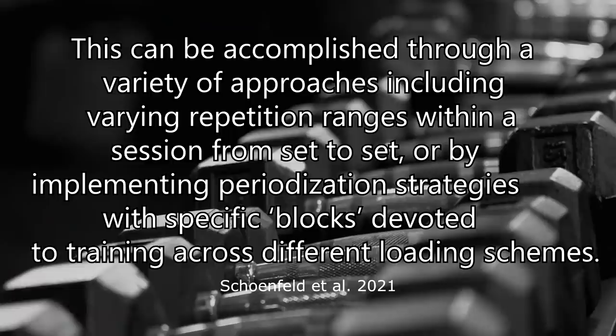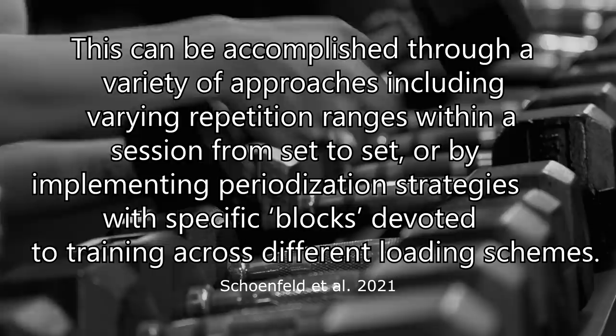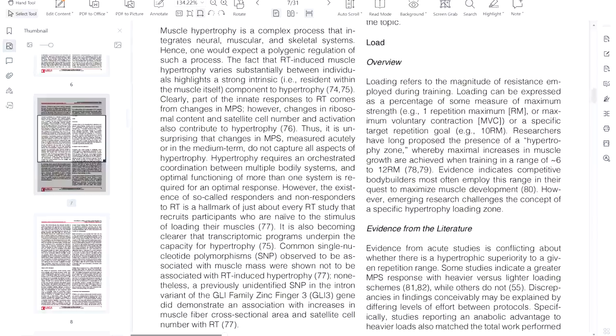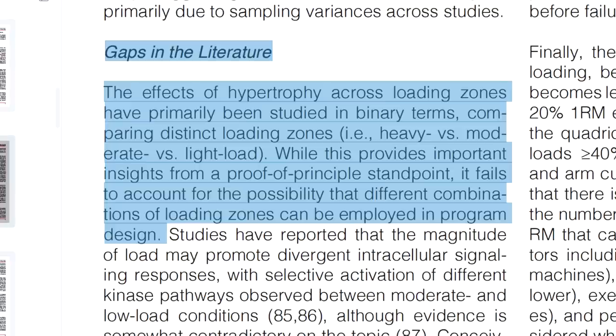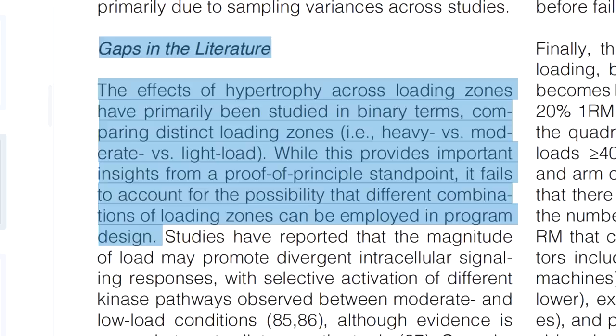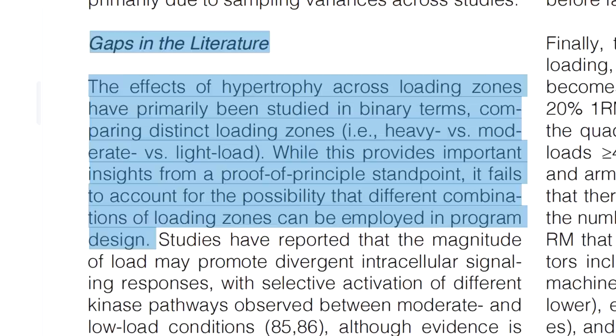This is very interesting for those who get stuck to one ideology. This can be accomplished through varying repetition ranges within a session from set to set, or by implementing periodization strategies with specific blocks devoted to training across different loading schemes. Don't bind yourself to one specific model of hypertrophy when it comes to load. Be creative — you can change from month to month, week to week, and even within a session using pyramid or reverse pyramid training. Research tends to compare things in binary terms, such as heavy versus moderate, which doesn't fully reflect the variety of approaches used in practice.